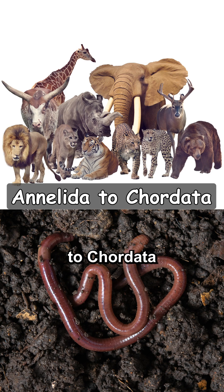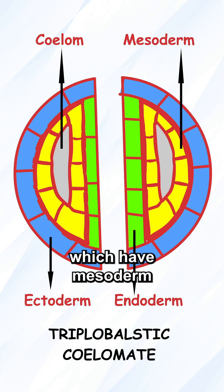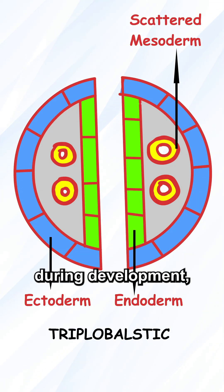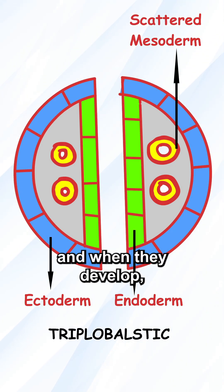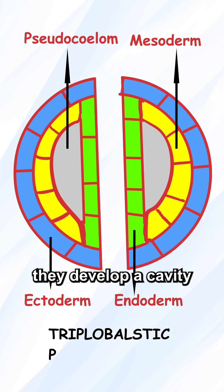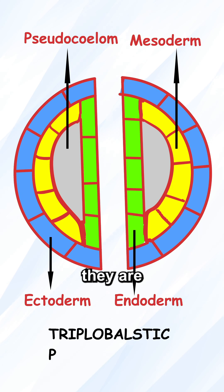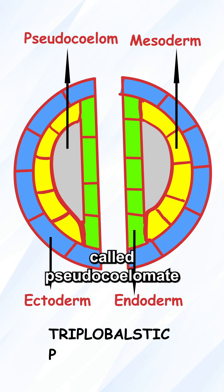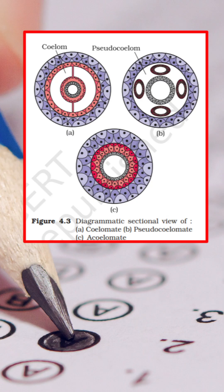Example: Annelida to Chordata. There are some organisms which have mesoderm scattered during development, and when they develop, they form a cavity with mesoderm on one side and endoderm on the other side. They are called pseudocoelomates. Example: Aschelmintha. Hope your confusion is cleared.